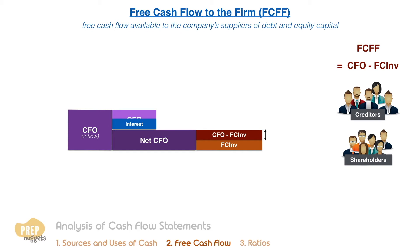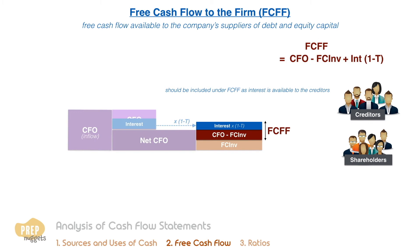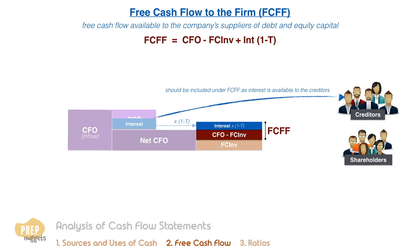This amount should be included under the FCFF computation as the interest paid is available to the creditors. As the interest paid is before tax, it should be multiplied by 1 minus the tax rate to reflect the actual cash that is available to the debt holders. So the free cash flow to the firm is the CFO minus the fixed capital investments plus the after-tax interest.